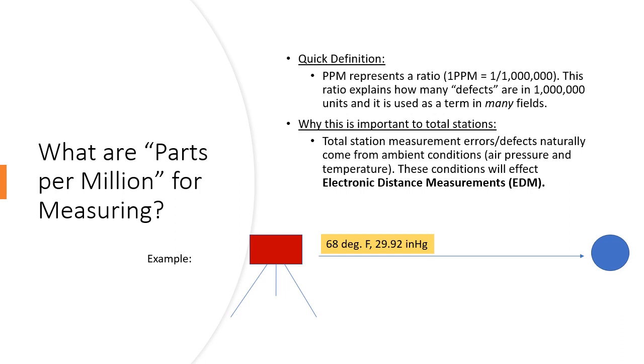When you type that into your tablet, the tablet will let you know what the parts per million error is. So in this case I typed that in and the tablet said parts per million was zero, which means that in those ambient conditions the tool doesn't need to make any sort of adjustments. So I go ahead and make that measurement and let's say that the measurement comes back as 100 feet.